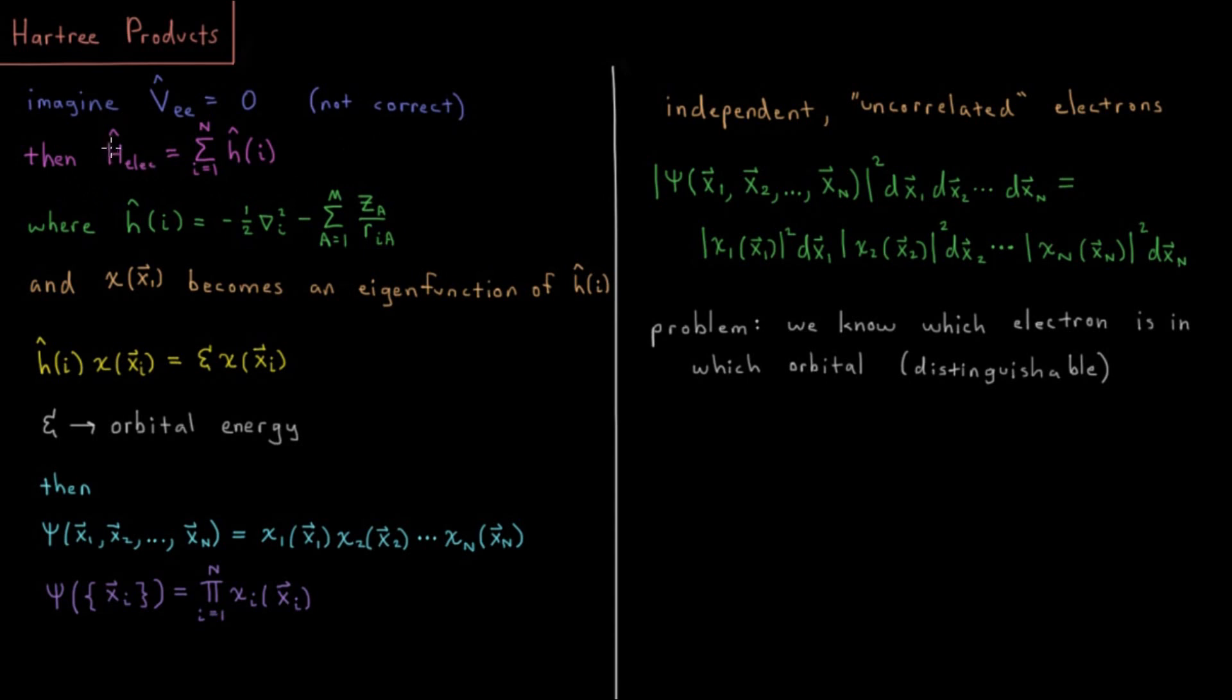If that were the case, then our electronic Hamiltonian, as we saw about two videos ago, we could write that in the following way. We could write it as the sum over all electrons of some one-electron energy operator.